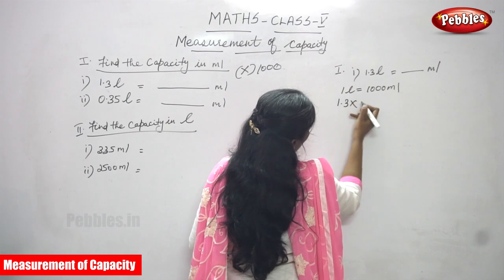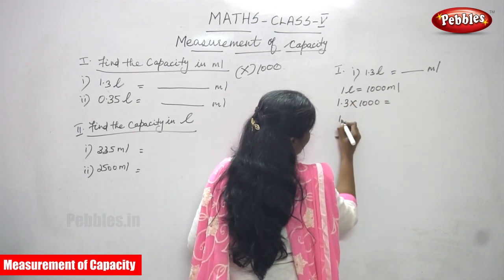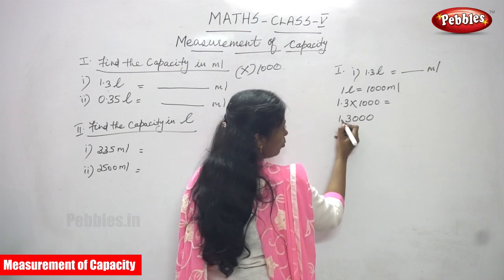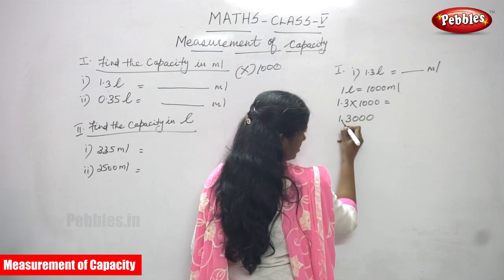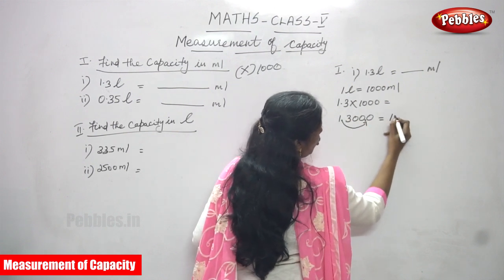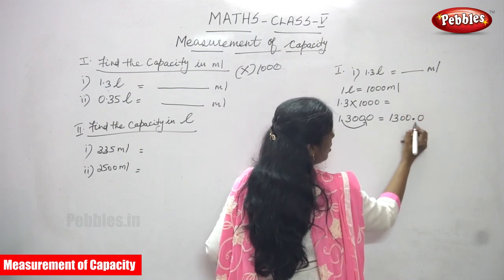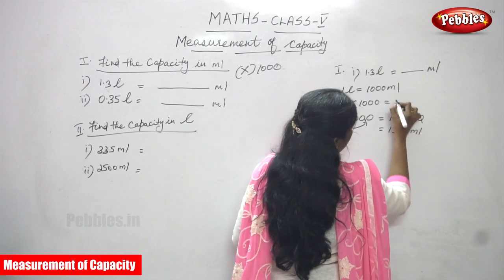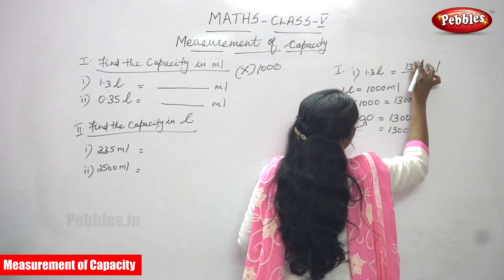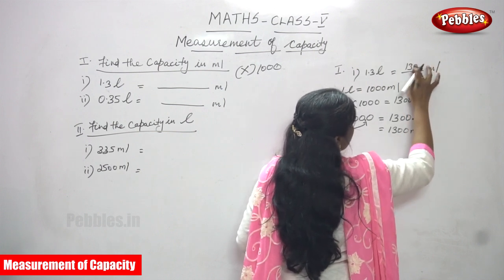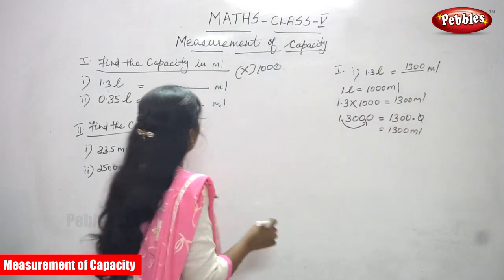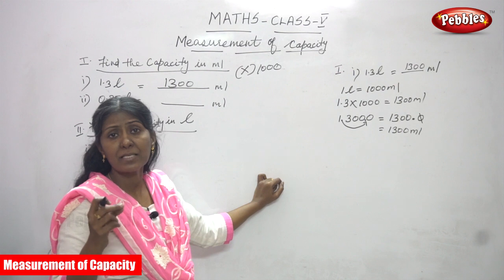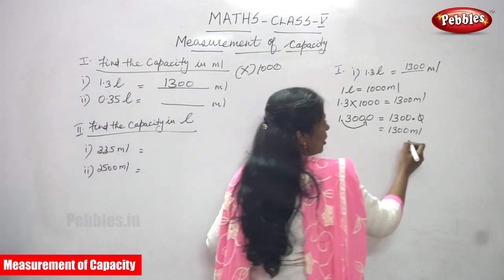So 1.3 into 1000. Write 1.3 as it is, then add three zeros from 1000. The decimal point moves three places to the right. So the point comes here — 1300, then point, then zero — but after the point you cancel the zero. So the answer is 1300 ml. The full form is milliliter; ml is the symbol. Don't forget to write the unit ml.